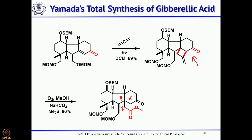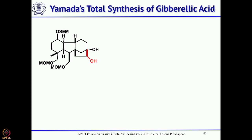How does the keto ester form? Once you have the diketone from ozonolysis, the strained four-membered ring opens up: one carbonyl attacks the other and it opens up, giving the corresponding keto ester. Once you have the keto ester, reduce again with potassium in liquid ammonia. Potassium in liquid ammonia gives one electron; that electron goes to the ketone, which can then cyclize to give the corresponding hydroxy compound — a dihydroxy compound. The ketone is further reduced under the potassium/liquid ammonia condition to give the diol.